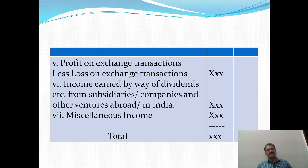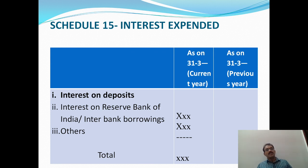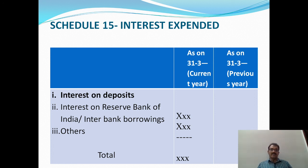The last item in Schedule 14 is Miscellaneous Income. Schedule 15 is Interest Expended, which includes Interest on Deposits and Interest on Reserve Bank of India and Interbank Borrowings.